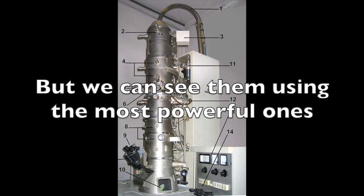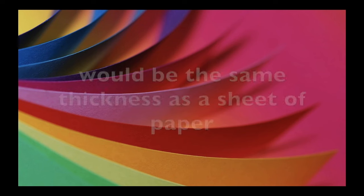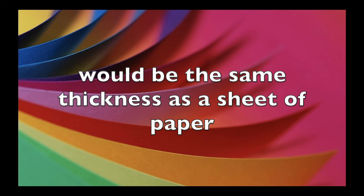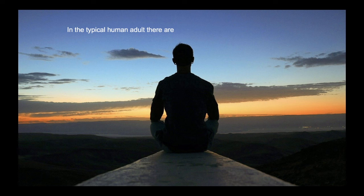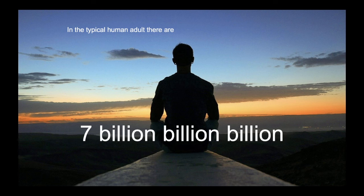Atoms are very tiny. We can't see them with a regular microscope, but we can see them using the most powerful ones, though these are not found in a classroom. To give you a sense of the size of an atom, a stack of one million atoms would be the same thickness as a sheet of paper. A typical adult human has seven billion billion billion atoms in them.